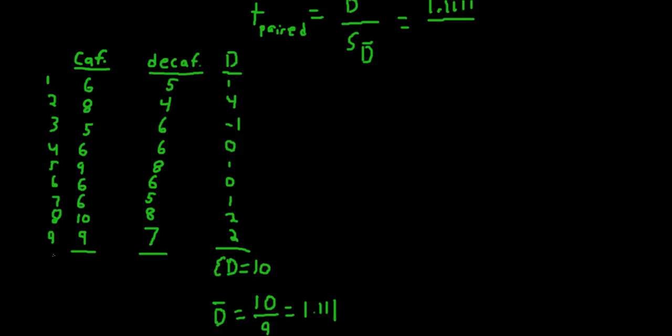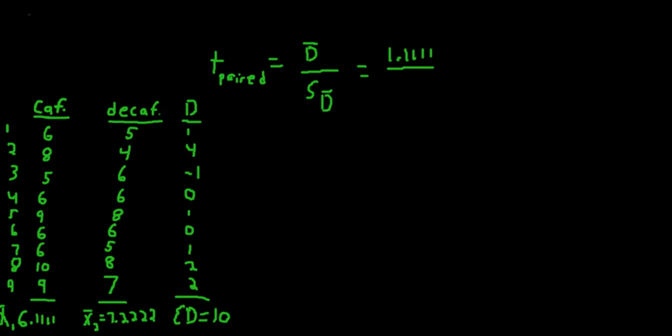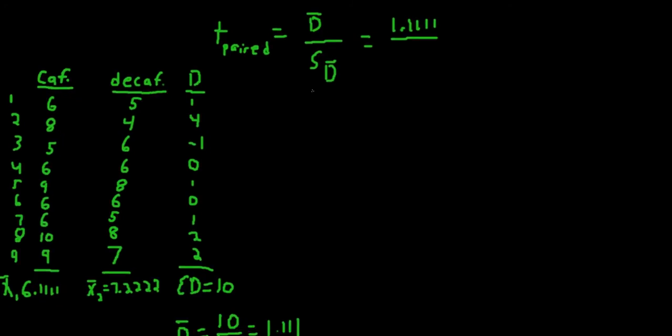If we were to calculate the mean for the first column, for the decaf condition and the caffeinated condition, we would get a mean for the caffeinated condition of 6.1111. So we can just call that our mean for condition 1. And our mean for condition 2 would be 7.22, which if we were to subtract the caffeinated condition from the decaf condition, we would get 1.111. So that's another way to get the average difference.